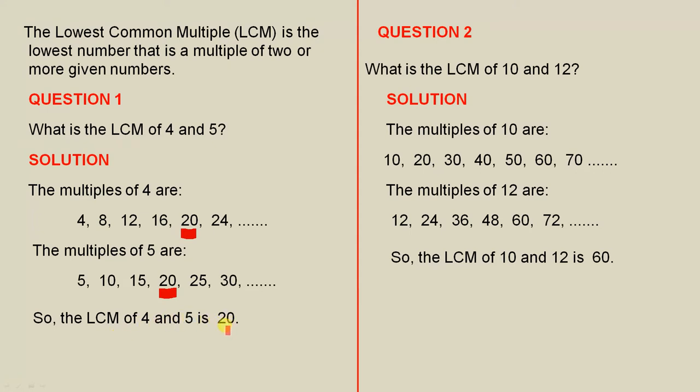And what that means is, 20 is the lowest number that 4 and 5 will divide into.